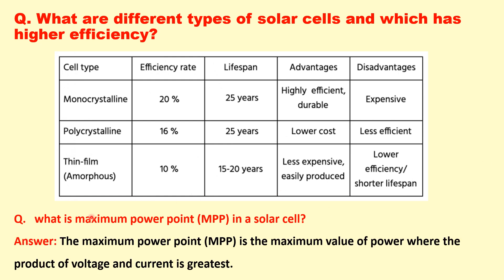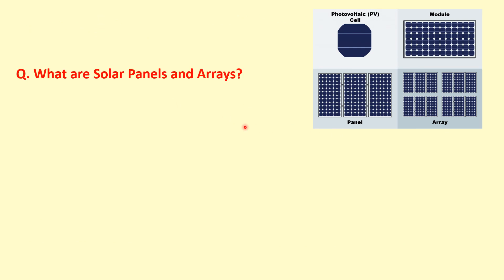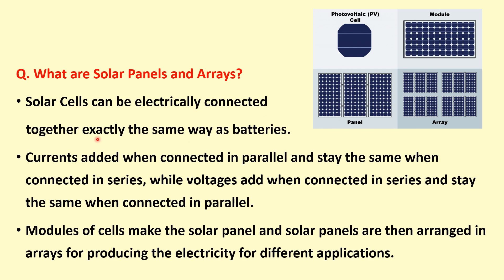What is the maximum power point in a solar cell? The maximum power point is the maximum value of power where the product of voltage and current is greatest. What are solar panels and arrays? Solar cells can be electrically connected together exactly the same way as batteries. Currents add when connected in parallel and voltages add when connected in series. Using these, modules are made, arranged into solar panels, and these panels form arrays used for producing electricity for different applications.